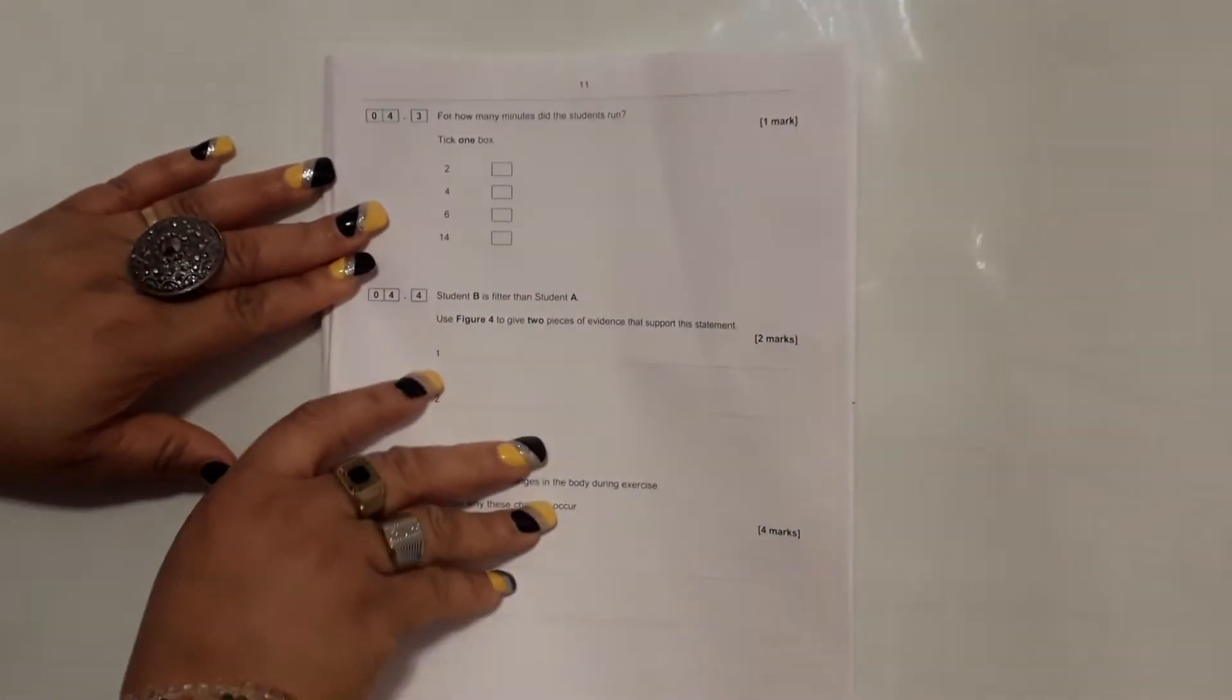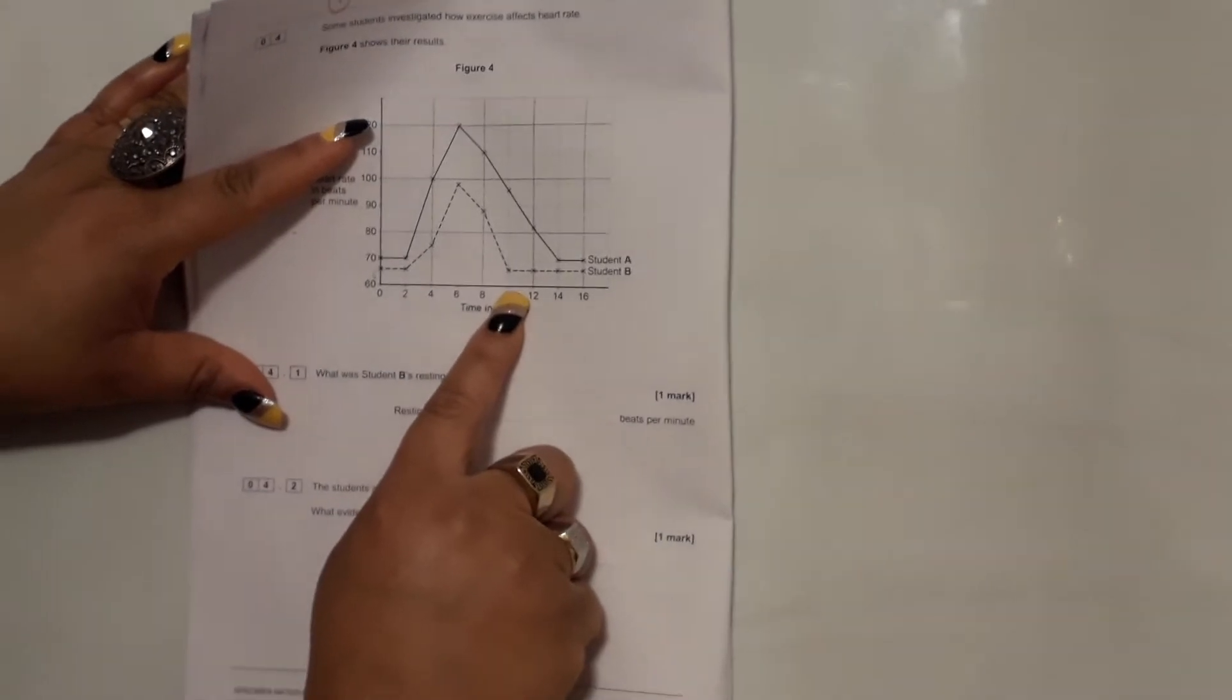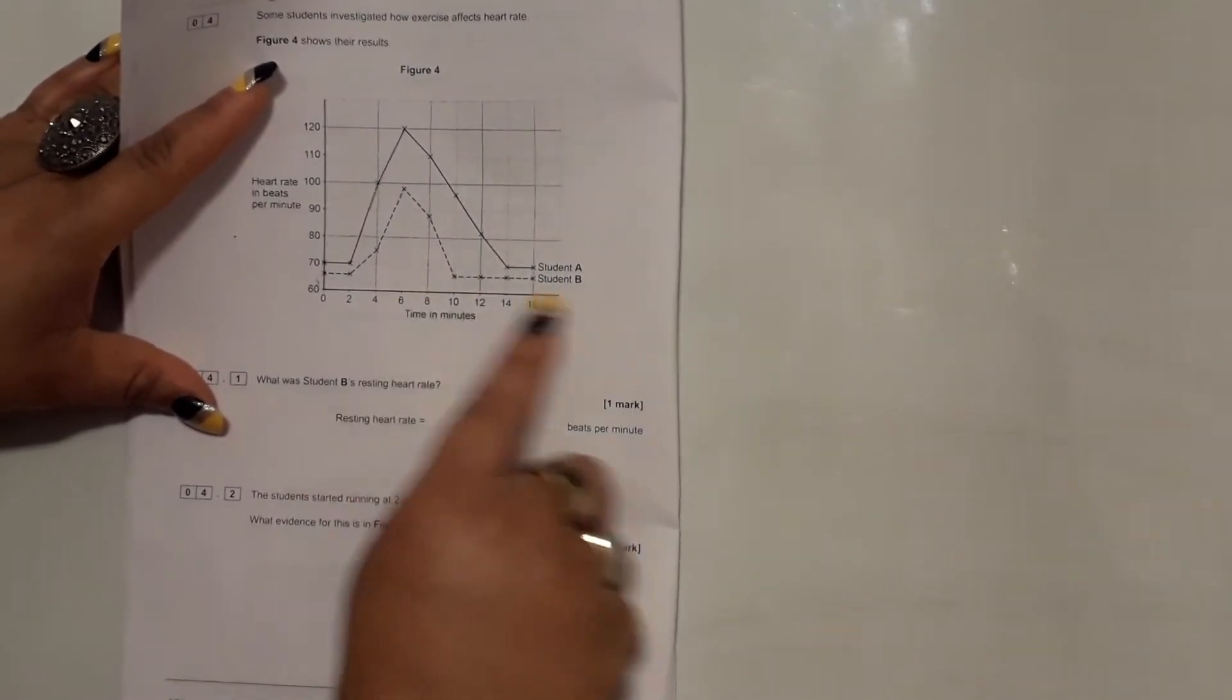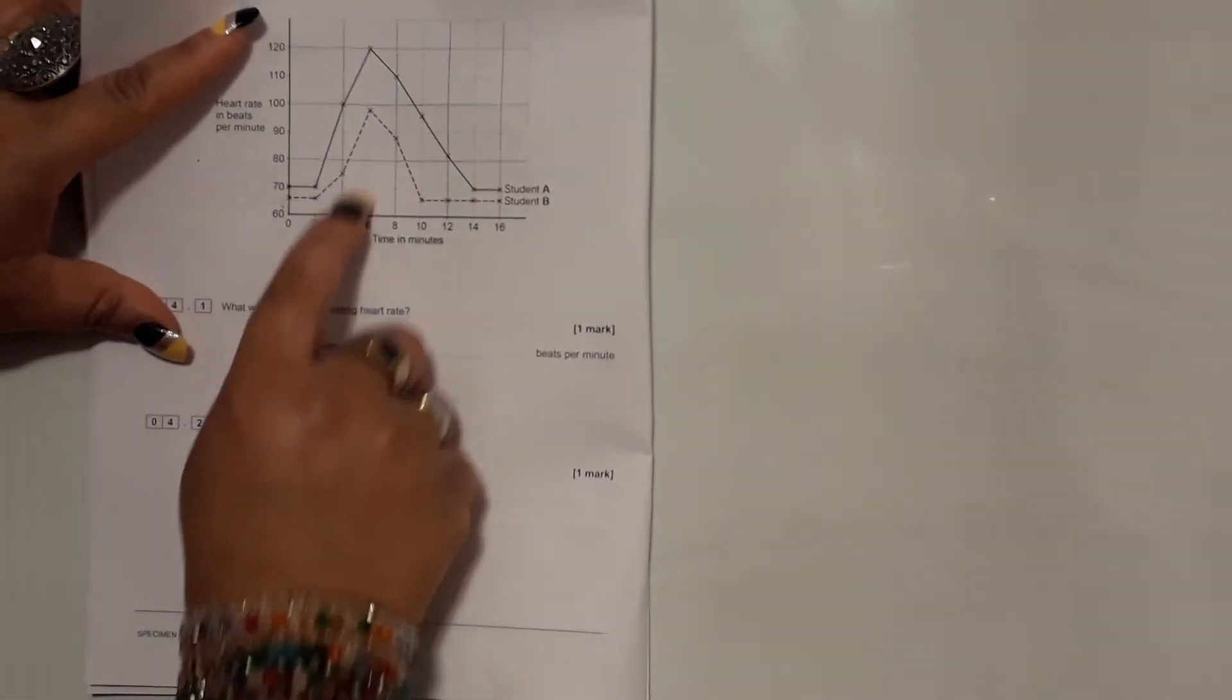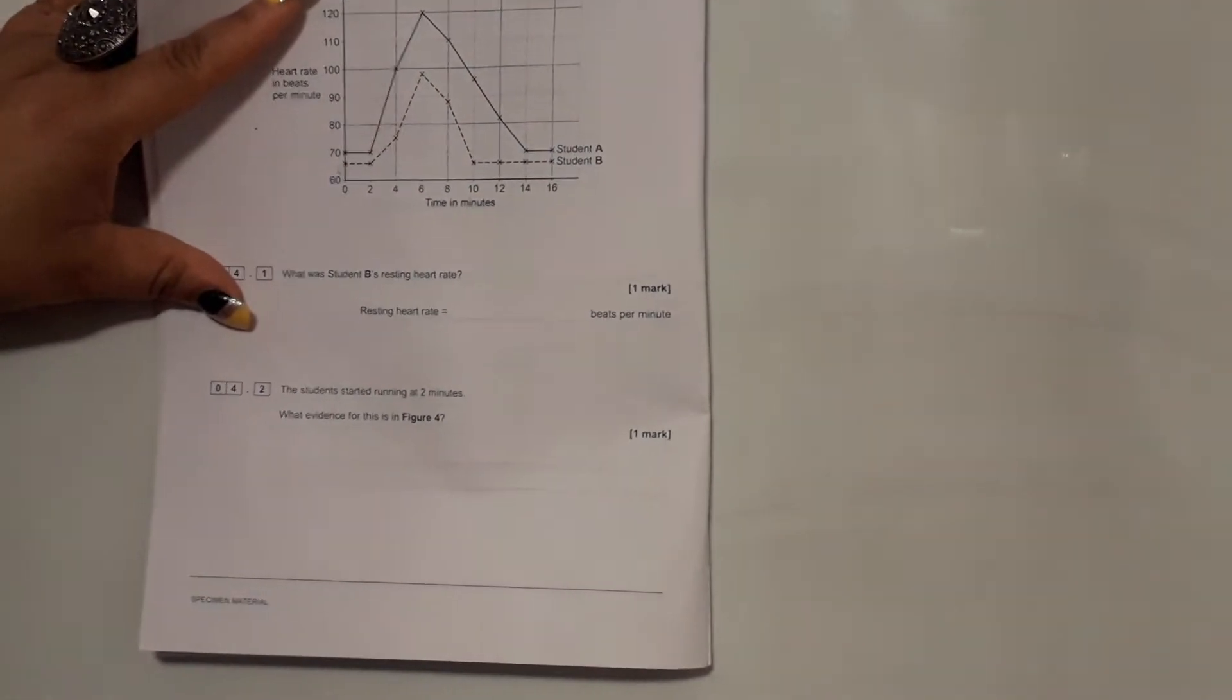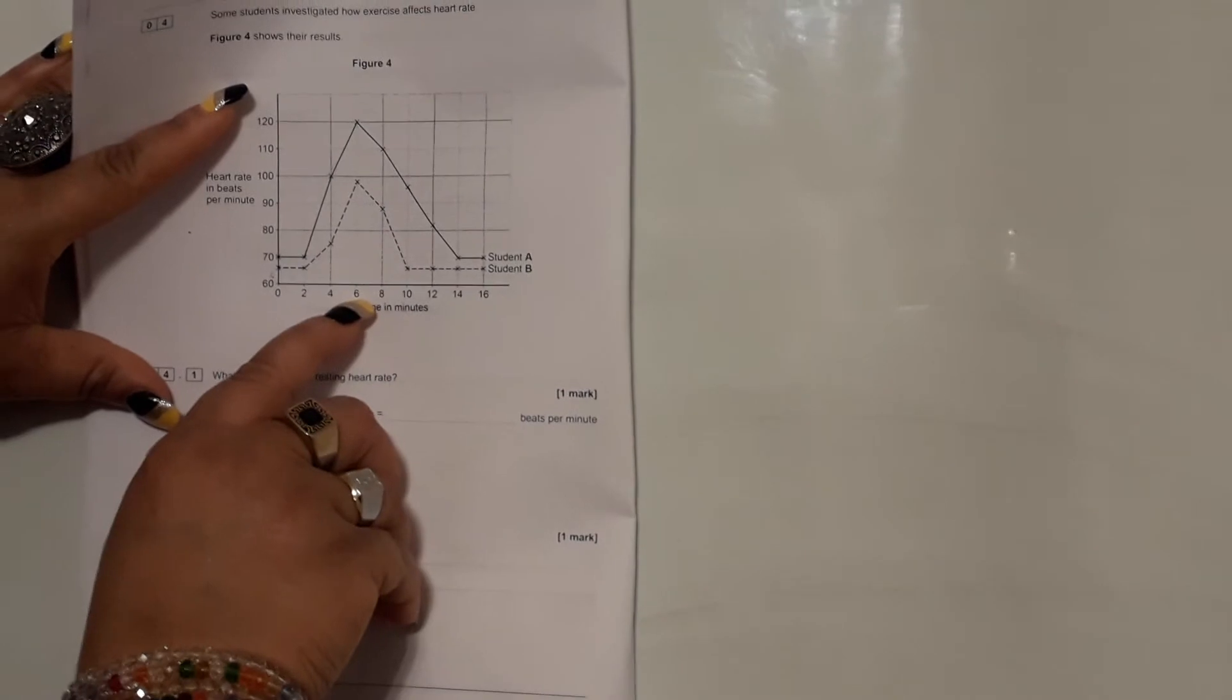For how many minutes did the students run for? If you go over to the graph, they started running at two minutes. Some students might be tempted to say, oh, they stopped at 10 minutes. No, that was when their resting heart rate came back to the resting heart rate. Actually, if you look at the peak here, which was six minutes after they started running, that was when they stopped running. Because the downward side of the graph shows you that they were coming down, they were cooling down, their breathing was returning back to normal. So between two and this point six, you do six take away two, your answer is four.